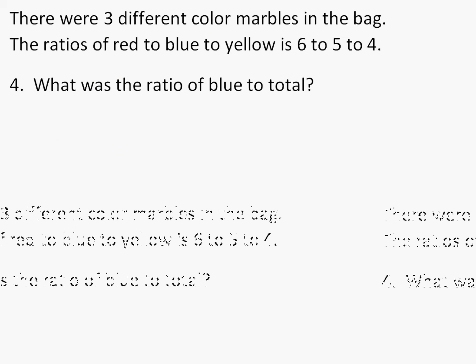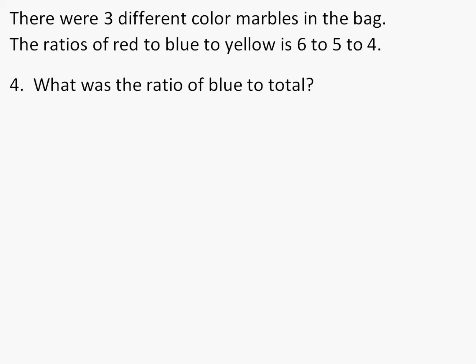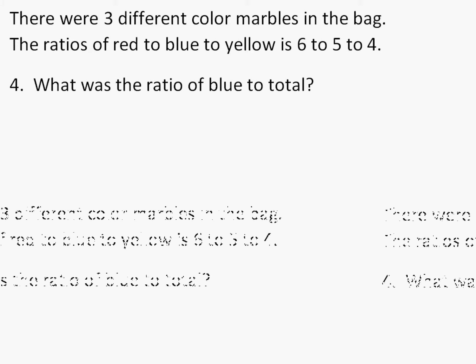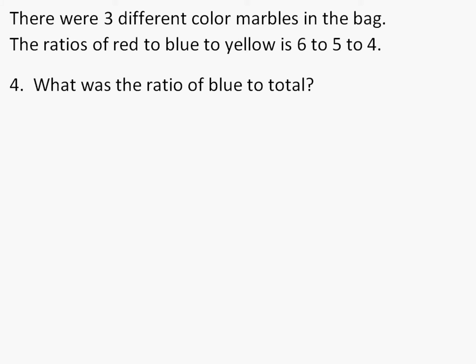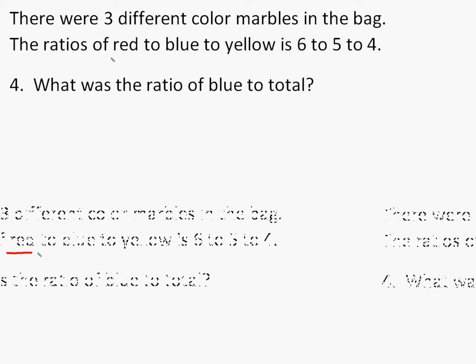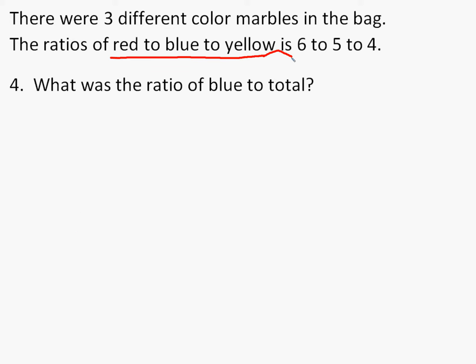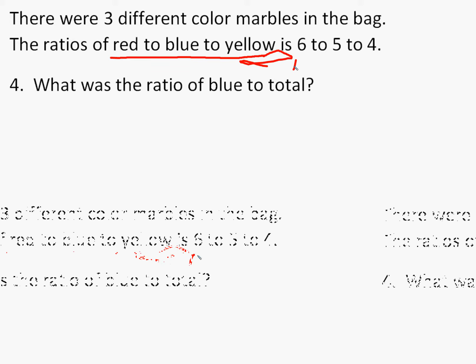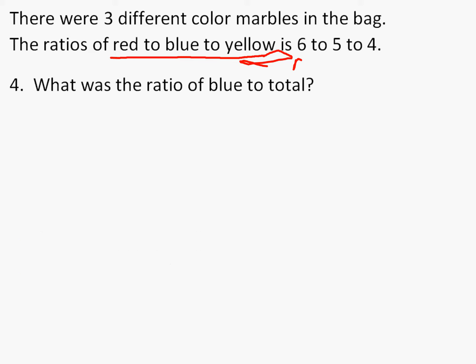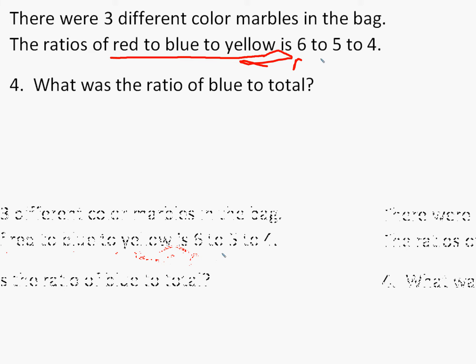We're going to use this scenario for the next few questions. It says there were three different color marbles in the bag, the ratio of red to blue to yellow. So this is actually a ratio of three things right in a row. So this represents our red, the next one represents our blue, and the last one represents the yellow.